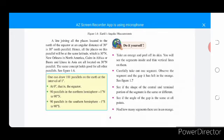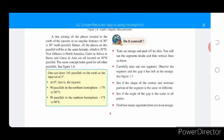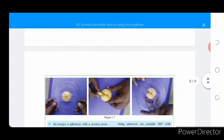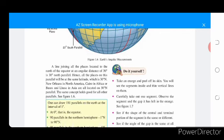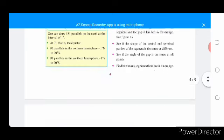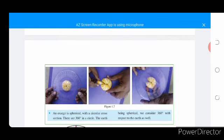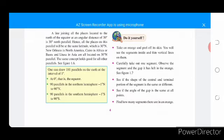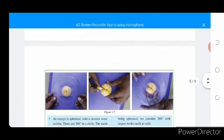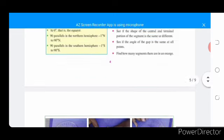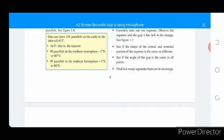Take an orange and peel off its skin. You will see the segments inside and thin vertical lines in them. Carefully take out one segment. Observe the segment and the gap it has left in the orange. See figure 1.7. See if the shape of the central and terminal portion of the segment is the same or different. See if the angle of the gap is the same at all points. Find how many segments there are in an orange.